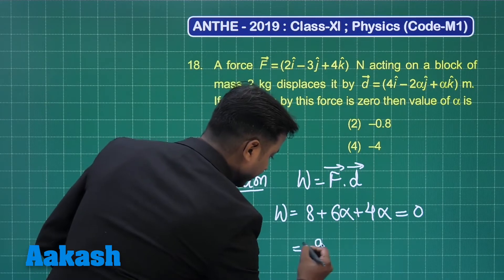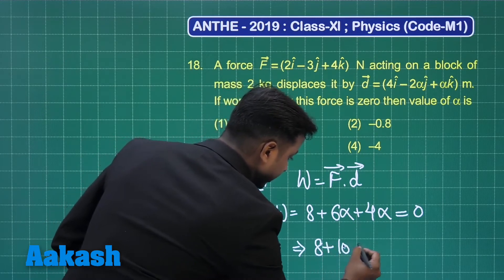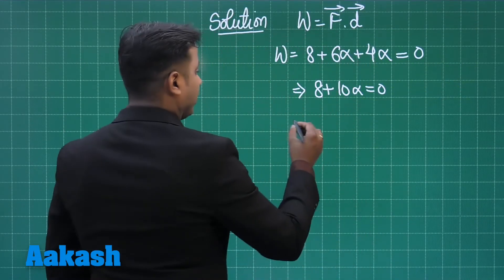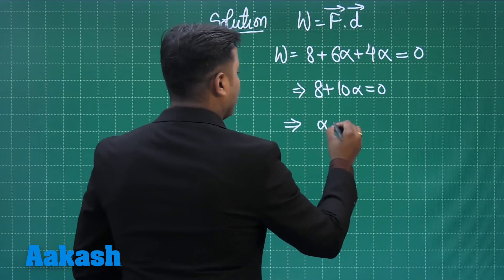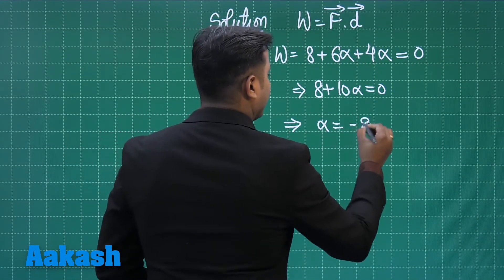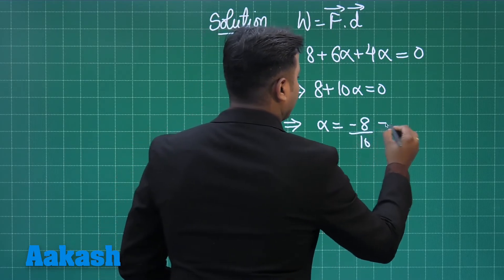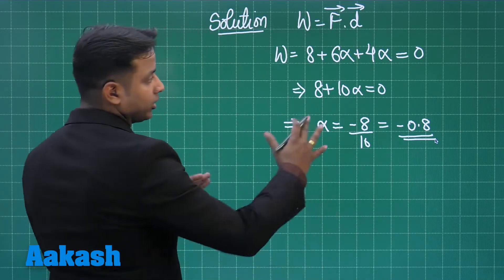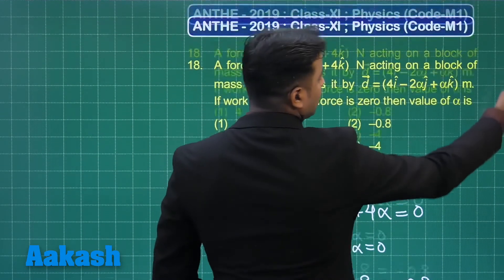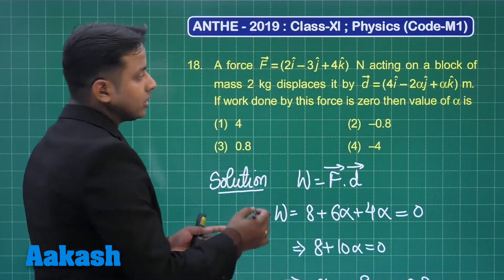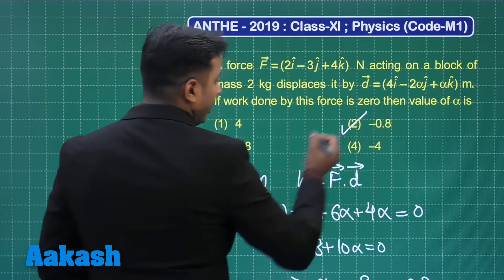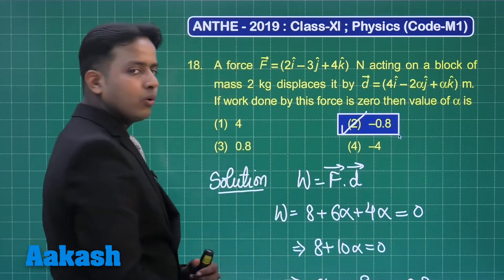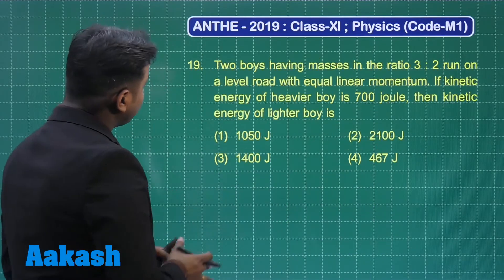Solving 8 + 10α = 0 gives alpha = −8/10 = −0.8. The correct option is option number 2. Question number 19 says: two boys having masses in the ratio 3 to 2 run on a level road with equal linear momentum.